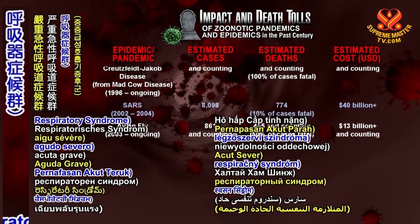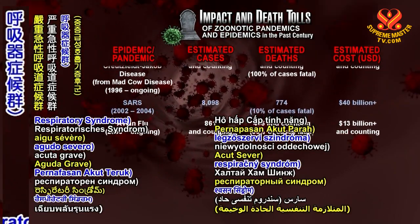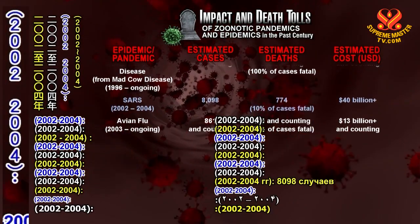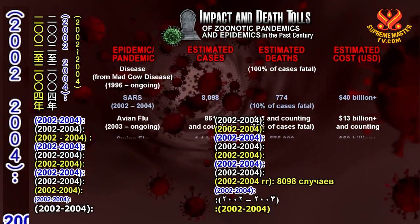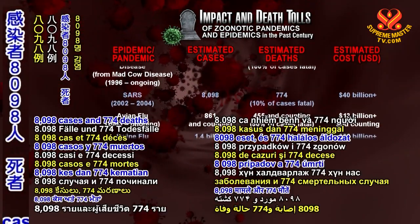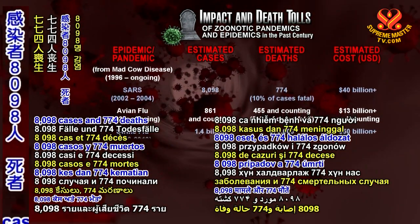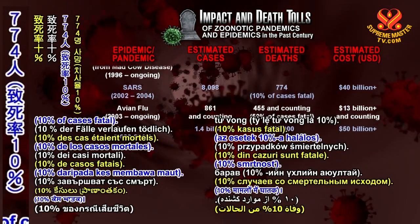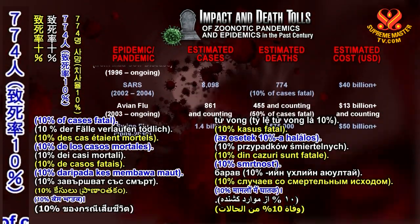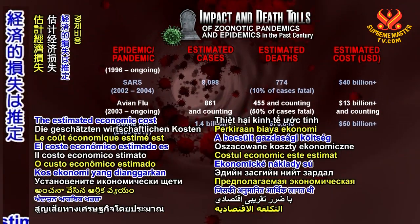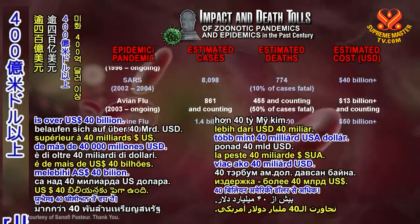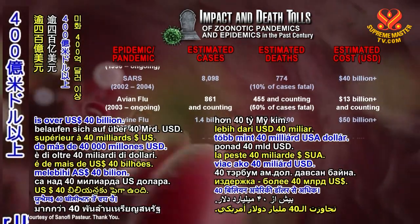SARS (Severe Acute Respiratory Syndrome), 2002–2004: 8,098 cases and 774 deaths, 10% of cases fatal. The estimated economic cost is over 40 billion U.S. dollars.